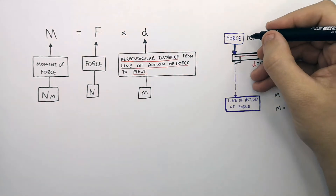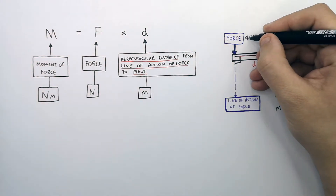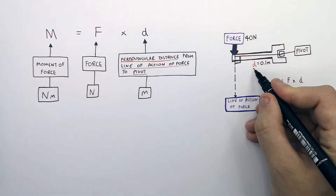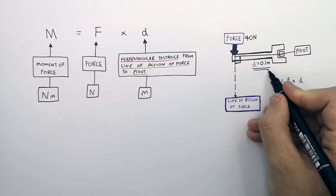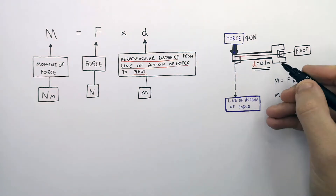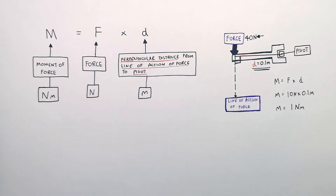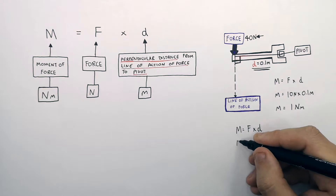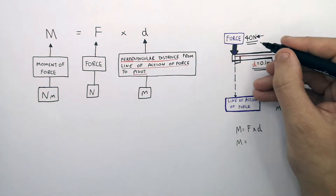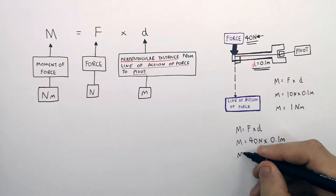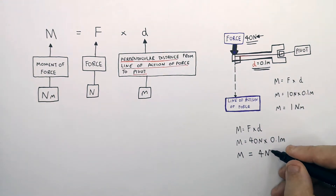Let's now increase the force acting on the spanner to 40 Newtons. The line of action remains the same, and the distance — perpendicular from the line of action of the force to the pivot — remains at 0.1 meters. To calculate the moment, M equals F times D. Substituting the numbers: M equals 40 Newtons times 0.1 meters, which gives you an anti-clockwise moment of 4 Newton meters.